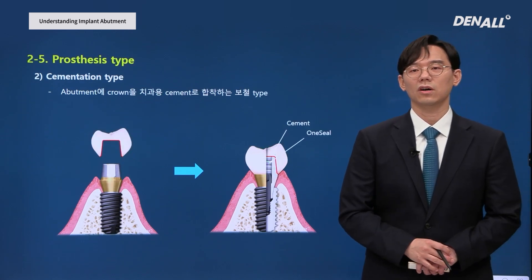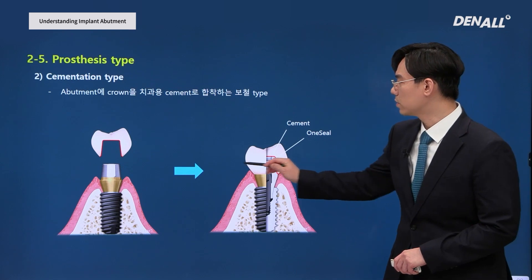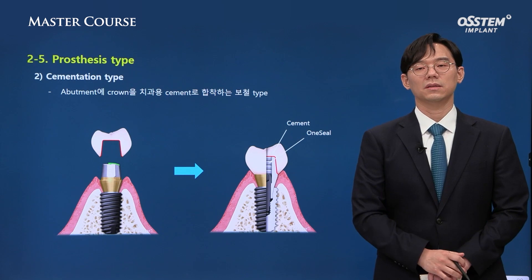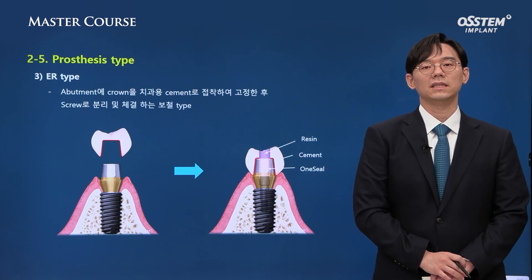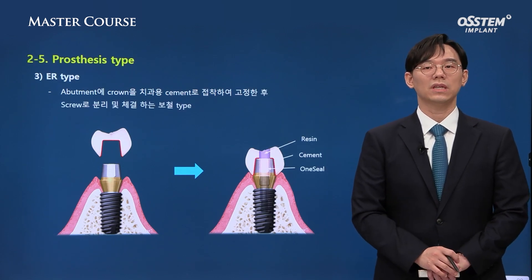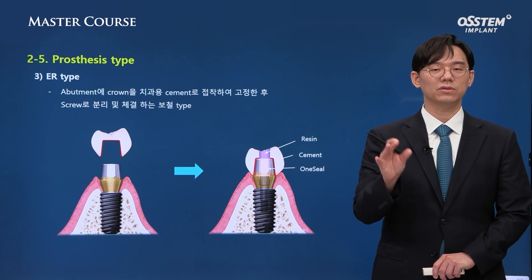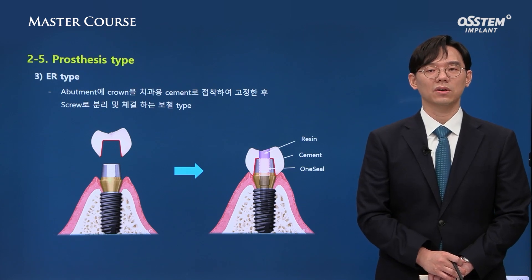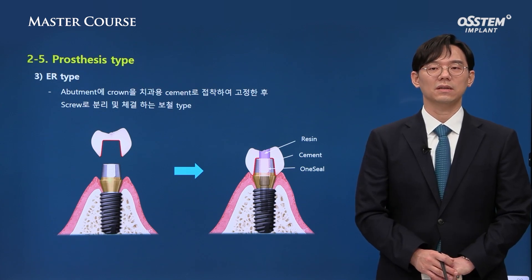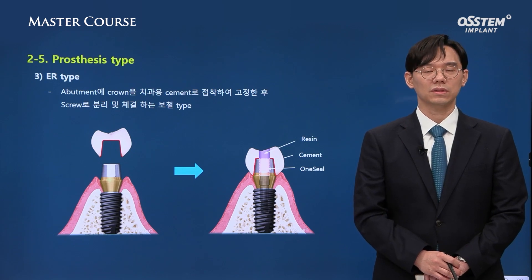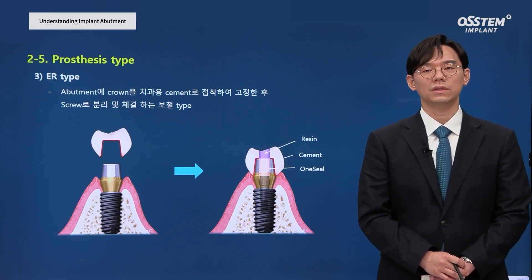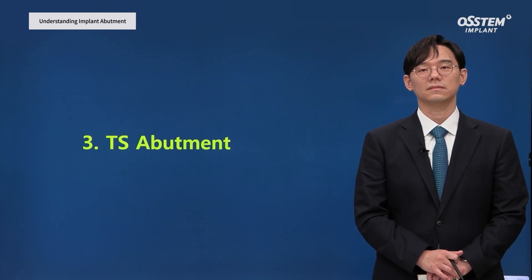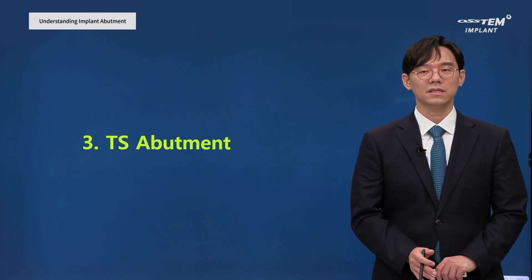In the case of cement-type prosthesis, on top of the abutment a seal is placed to fill it up, and then the prosthesis is cemented on top. As for ER-type prosthesis, there is already a screw access hole on top. The cementation process is similar to cement type — you connect the abutment first and then cement the crown. Just like screw type, you then use one seal and resin for sealing on the screw hole.